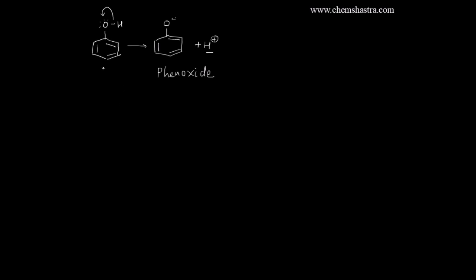Now the question arises: what is the acidity of phenol? If you compare this with the acidity of an alcohol molecule — as we saw in the last lecture — alcohol can undergo dissociation to give an alkoxide ion and an H+ ion. So, phenols are much more acidic than alcohols. The anion formed here is an alkoxide ion (with an alkyl group), while phenol forms a phenoxide ion (with an aryl group) — that's the key difference.